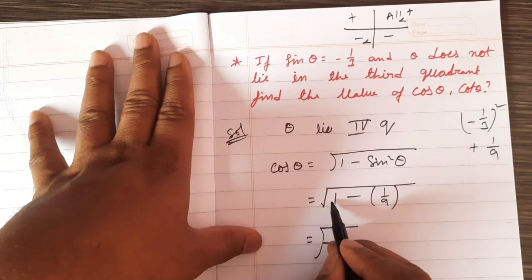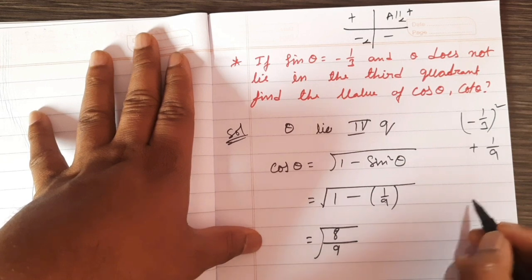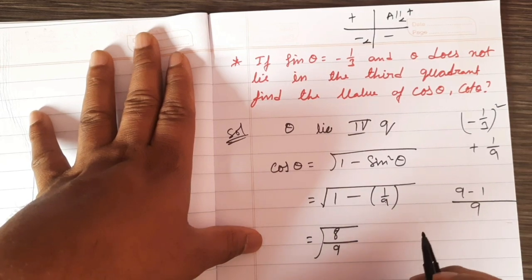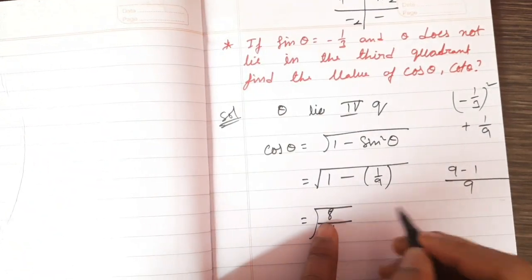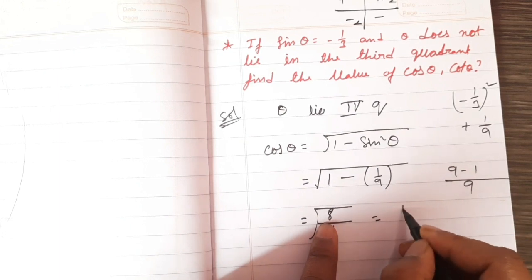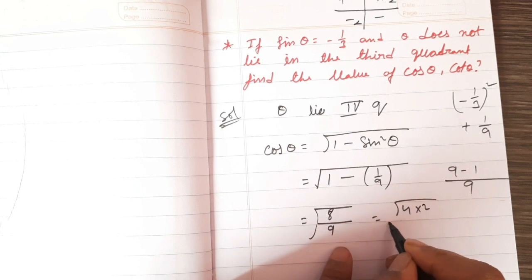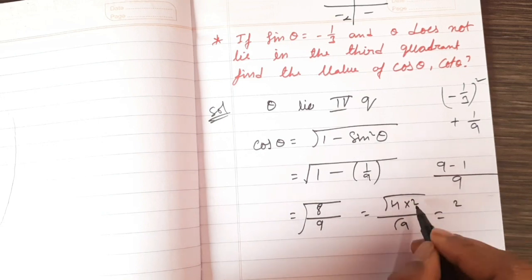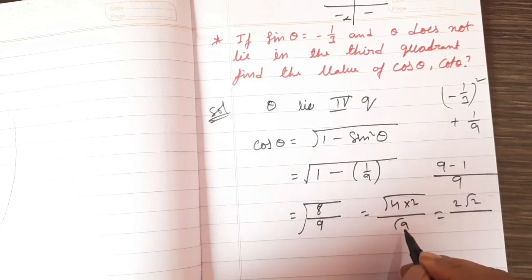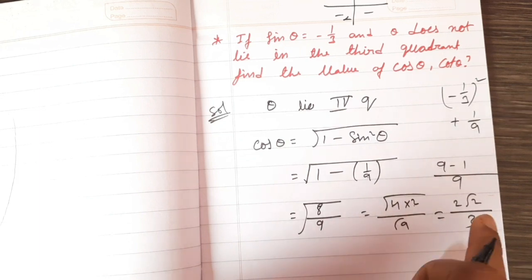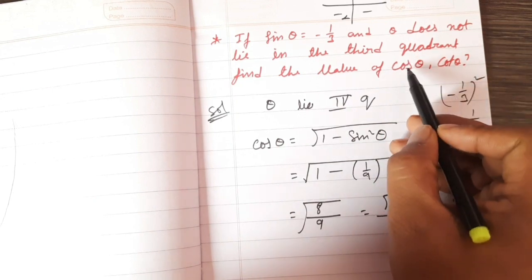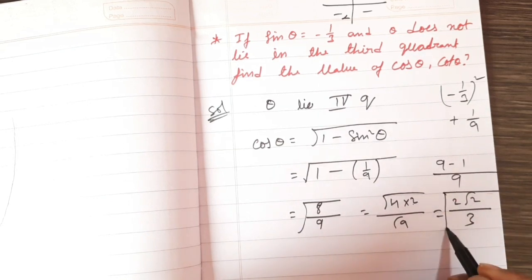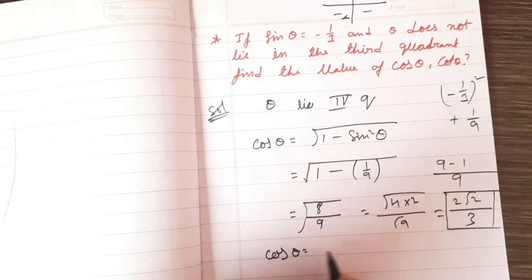So, 9 minus 1 by 9 — 9 minus 1 is 8, so root of 8 by 9. 8 is equal to 4 into 2, so this is root 9, giving 2 root 2 over 3. So this is the answer. Fourth coordinate — cos positive — will be positive value. So cos θ equals 2√2 by 3.